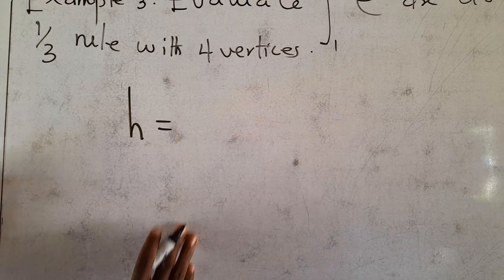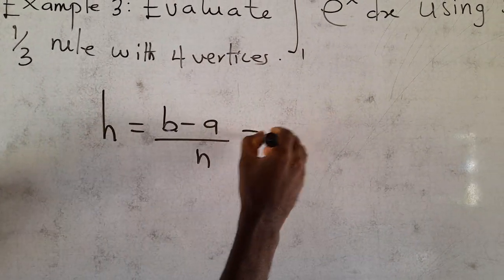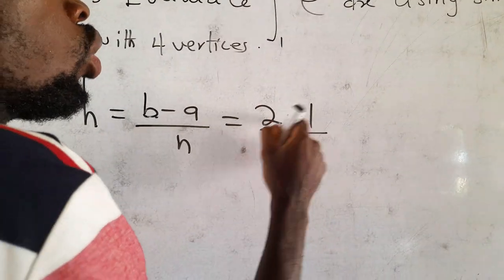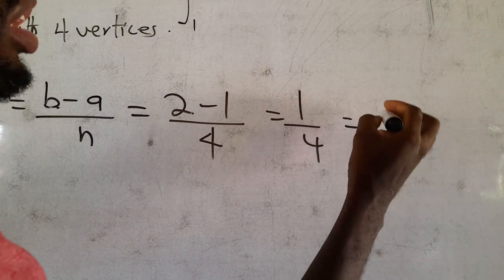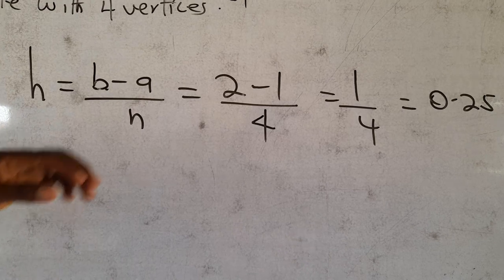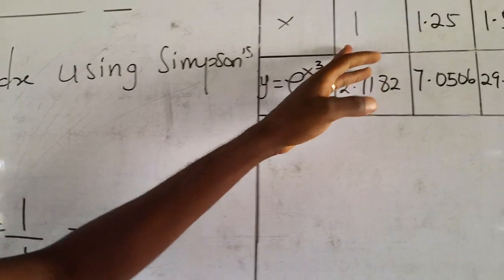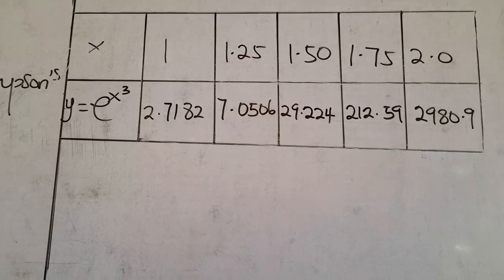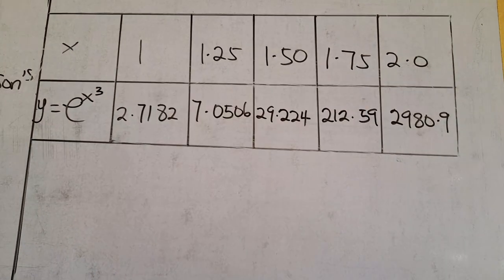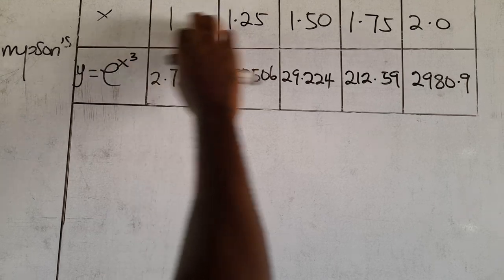Now compare your answers. We need to find the interval difference. h = (B − A) / N, where B is the upper limit and A is the lower limit. So 2 minus 1 is 1 over 4, and 1 divided by 4 is 0.25. We construct a table of x values from 1 to 2 with interval 0.25: x = 1, 1.25, 1.50, 1.75, and 2.